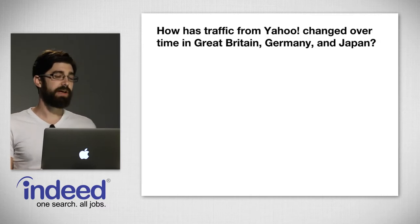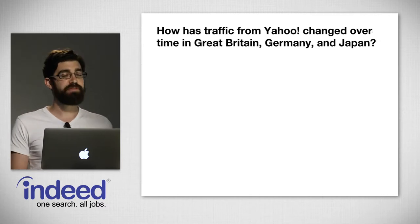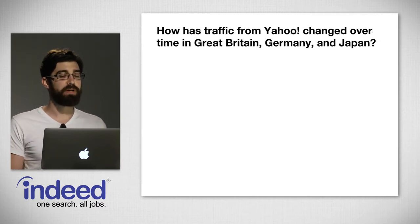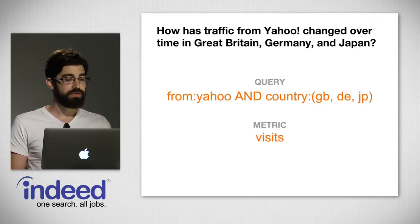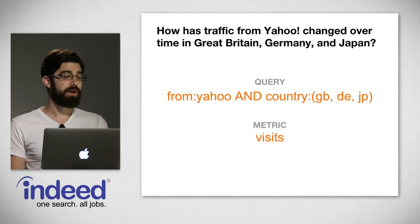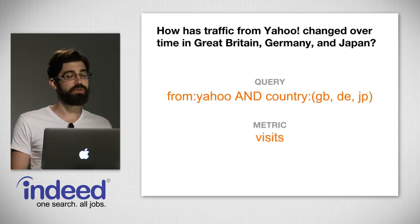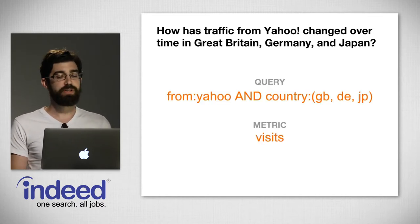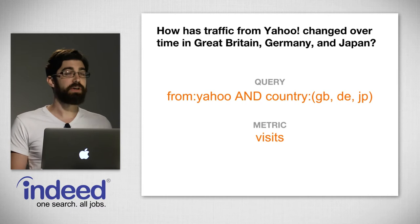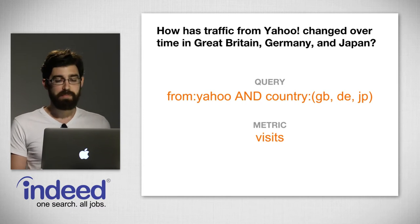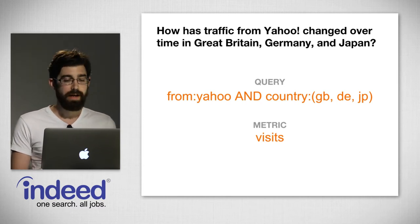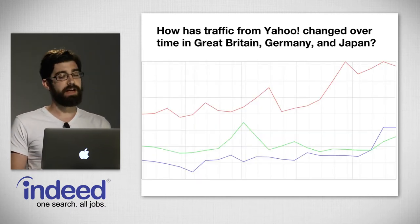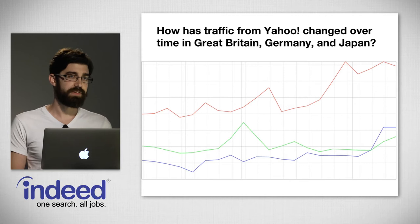We could also answer questions like how traffic from Yahoo changed over time in Great Britain, Germany, and Japan. We'd put in a query 'from Yahoo' and 'country: Great Britain, Germany, Japan' with the metric 'visits,' and it would output a graph. We used Ramses extensively — actually exclusively for two years — to manage all our tests and all our monitoring, and it was really good at doing a lot of things.